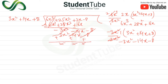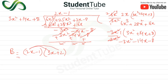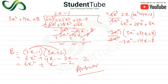So the quotient is 2x − 1. Therefore B = 2x − 1. Now multiplying (2x − 1) by HCF (3x + 2): 2x × 3x = 6x², 2x × 2 = 4x, −1 × 3x = −3x, −1 × 2 = −2. Combining: 6x² + (4x − 3x) − 2 = 6x² + x − 2. So the second polynomial is 6x² + x − 2.